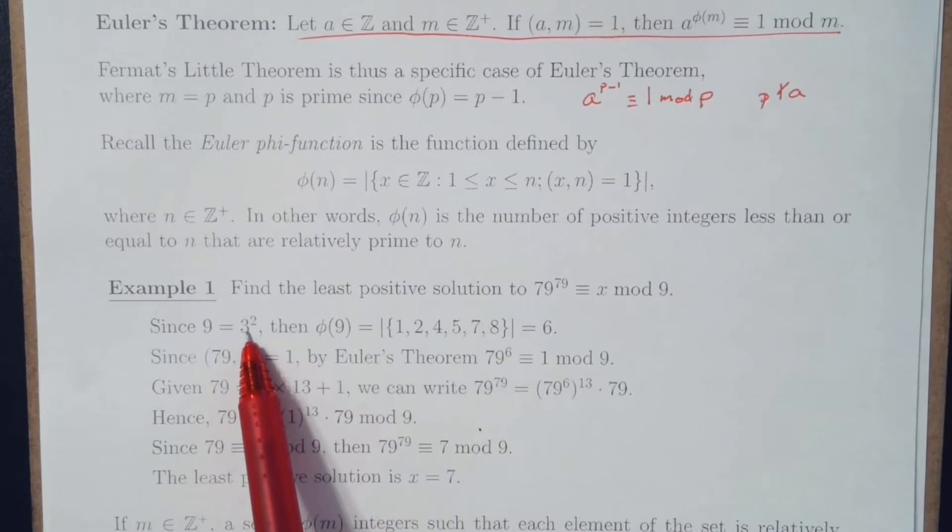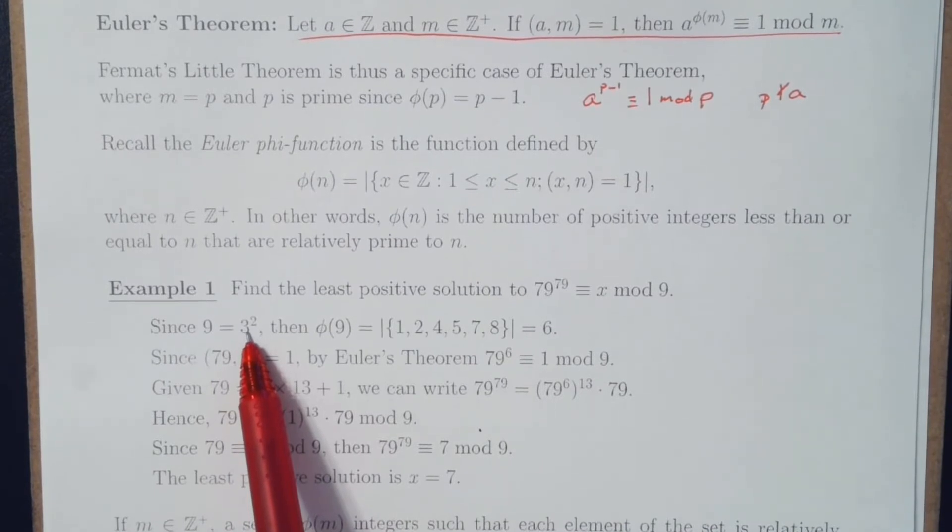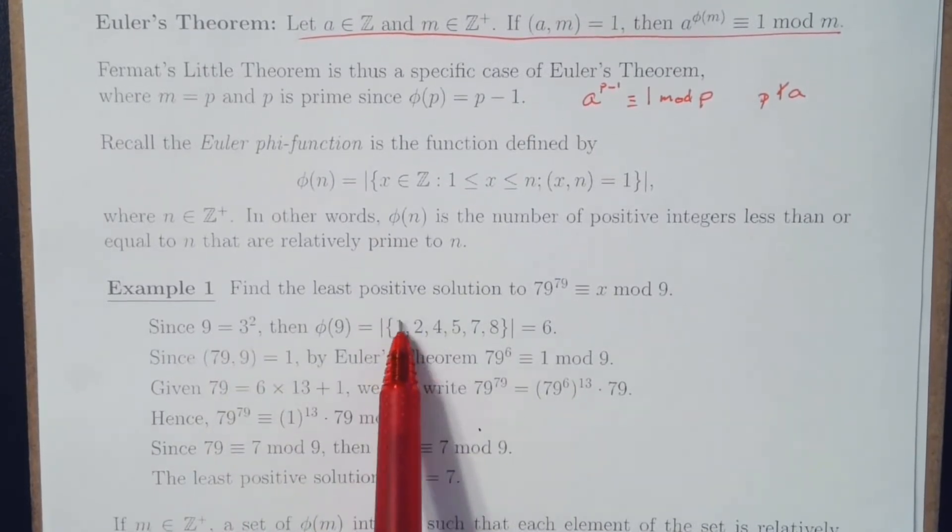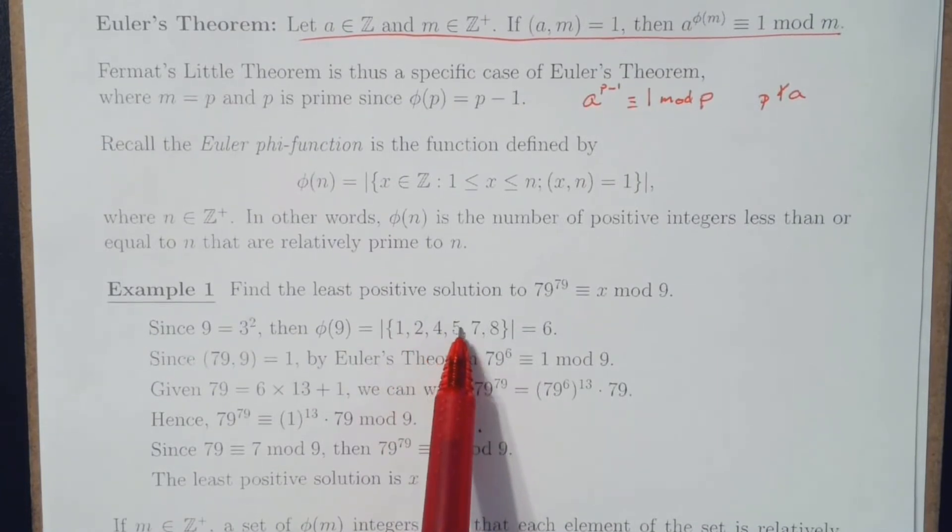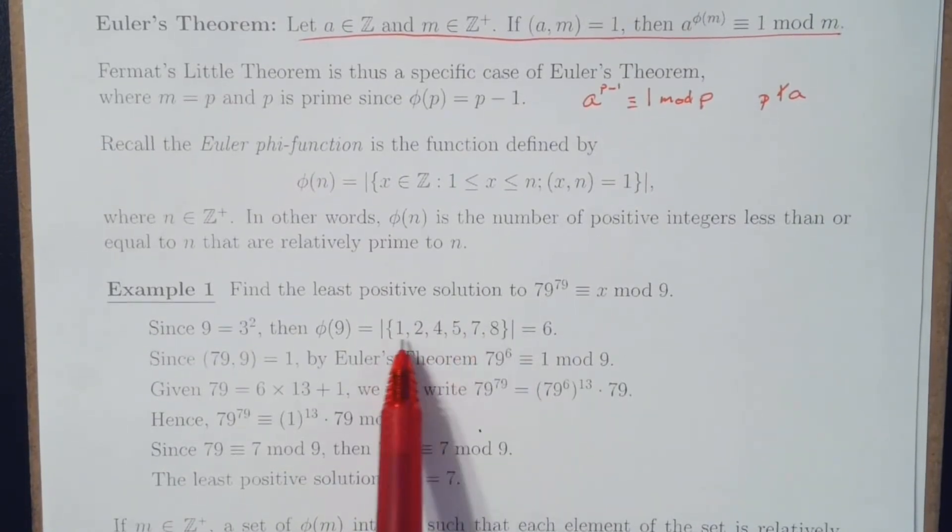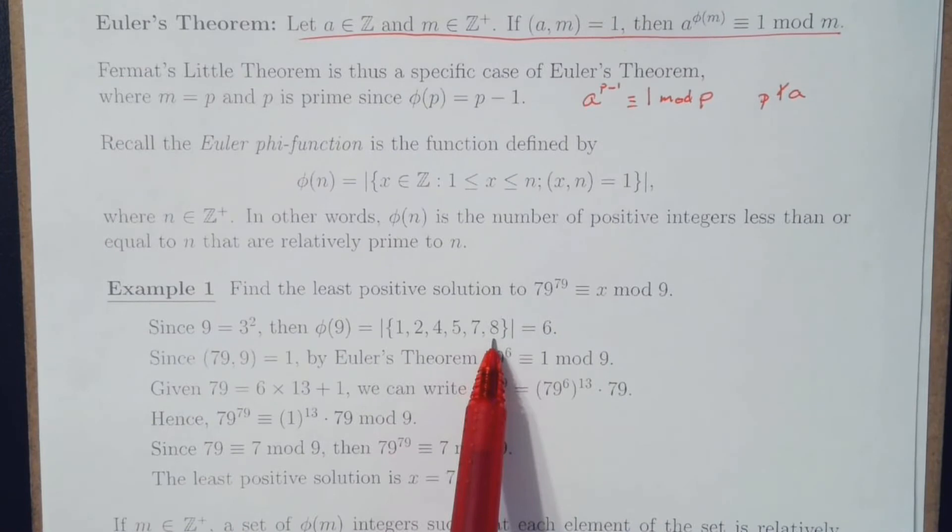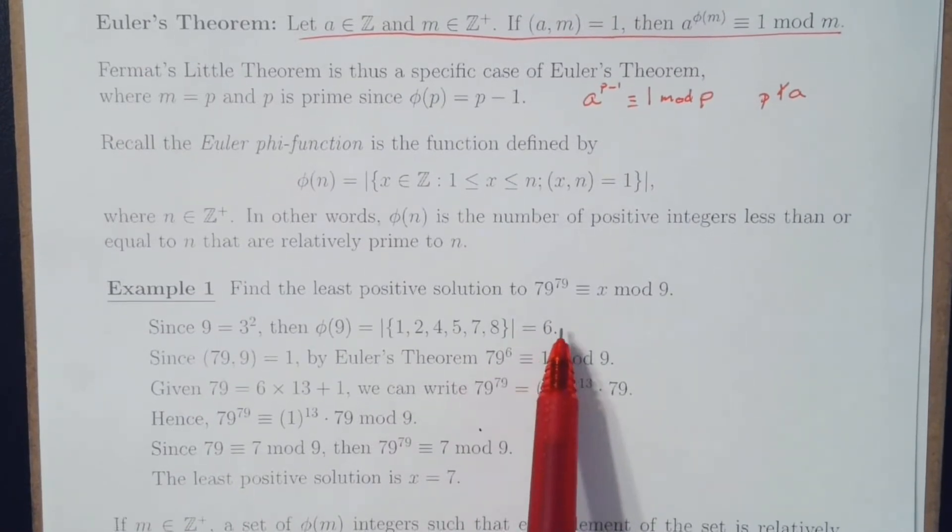In essence, everything that does not have 3 as one of its prime factors, so 1, 2, 4, 5, 7, 8. There are 6 of these numbers, so the phi function of 9 is 6.